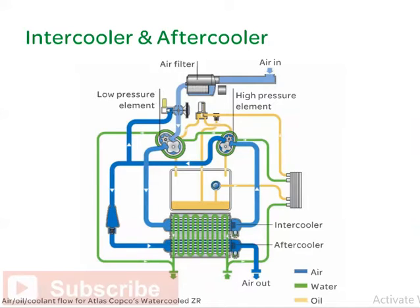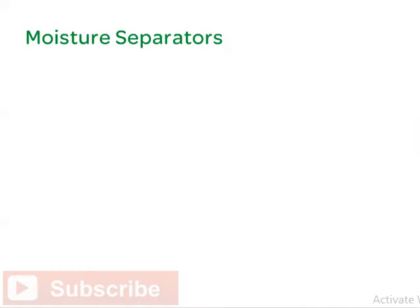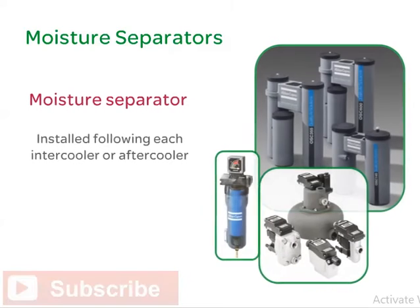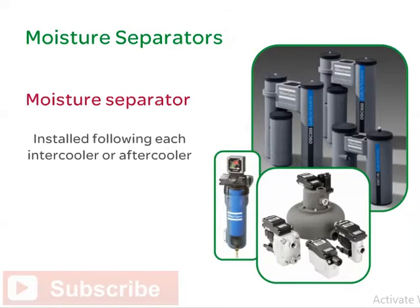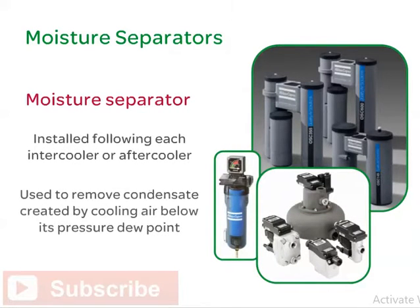If chilled water is used for cooling, energy savings potential is significant. See our class on waste heat recovery for more on this topic. A moisture separator installed following each intercooler or aftercooler is used to remove condensate created by cooling air below its pressure dew point.